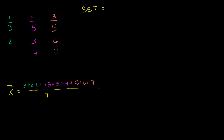3 plus 2 plus 1 is 6. 5 plus 3 plus 4 is 12. And 5 plus 6 plus 7 is 18. So 6 plus 12 is 18, plus another 18 is 36. Divided by 9 is equal to 4.